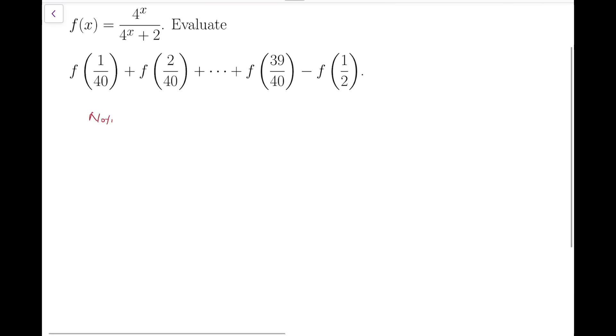notice that f(x) plus f(1-x) is equal to the original function added by 4 to the power of 1-x over 4 to the 1-x plus 2. Then you take a common denominator, in this case you simply multiply them.